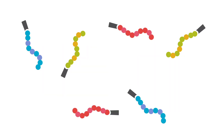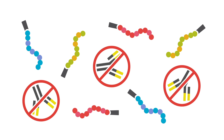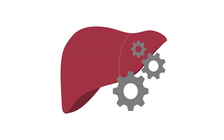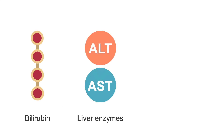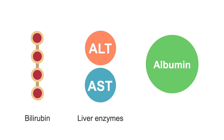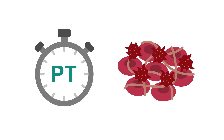The liver is the principal site for synthesis of all circulating proteins except gamma globulins. The liver function panel involves testing for the levels of bilirubin, liver enzymes, and the serum protein albumin. Prothrombin time, a measure of blood clotting, is also routinely measured.